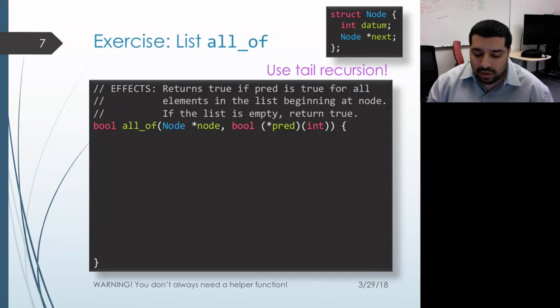If my current datum does satisfy the predicate, then I need to check the rest of the items in my list, and that's something I can use recursion for. I can just call this function recursively on the rest of this list, and that will tell me whether or not the remaining items all satisfy the predicate.